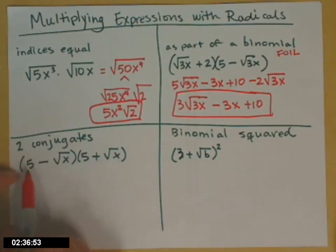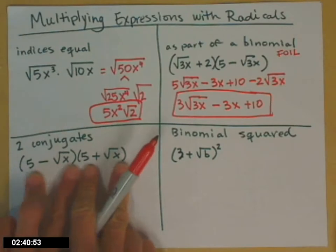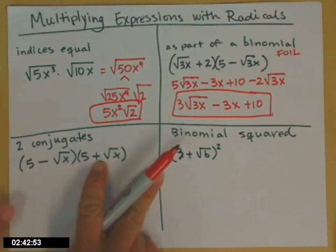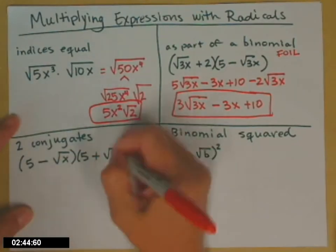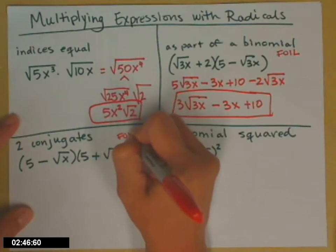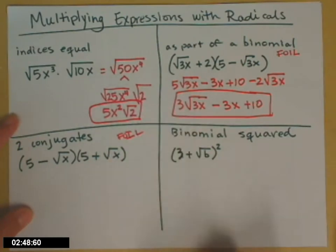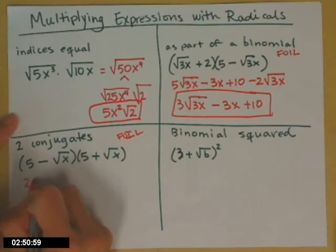Something fun happens when you multiply two conjugates. So conjugates where you have exactly the same terms but the sign in the middle is different. So we'll go ahead, binomials again. So think FOIL.